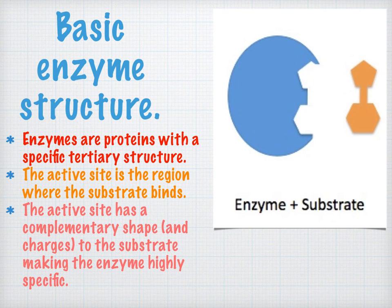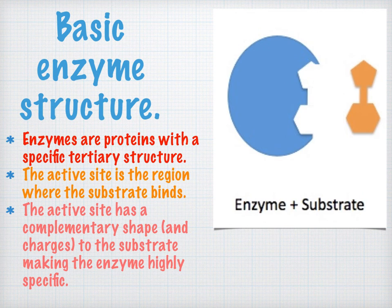Enzymes are proteins, meaning they're made out of a sequence of amino acids joined together with peptide bonds. All enzymes have a specific tertiary structure, and the key part of this structure is the active site. The active site has a complementary shape, meaning its shape and charges match to the substrate. This makes enzymes highly specific, so for a single substrate, you will only have a single enzyme which catalyzes its reaction.